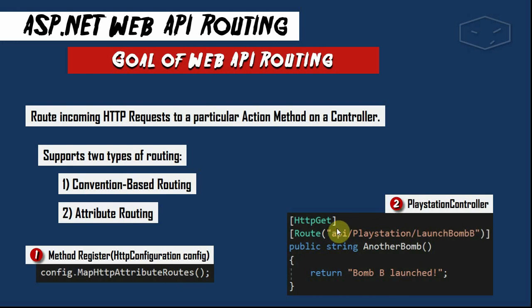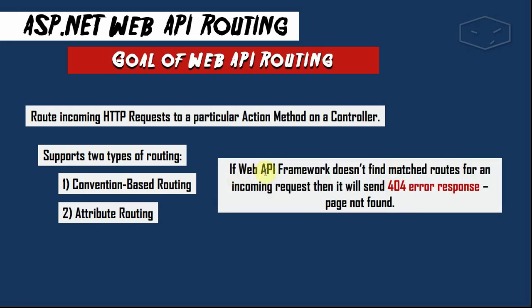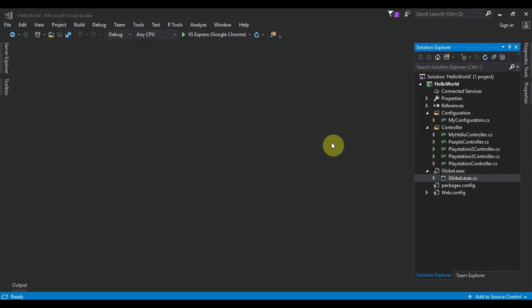With attribute routing, we configure the route attribute to fire an action method. If Web API doesn't find a route for the request, it will give you a 404 error — page not found. In this presentation I will not do any live code; I will just show code on the slides, but I will leave a link in the description for you to download the source code.